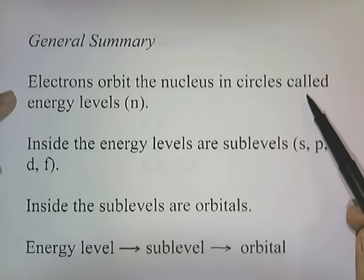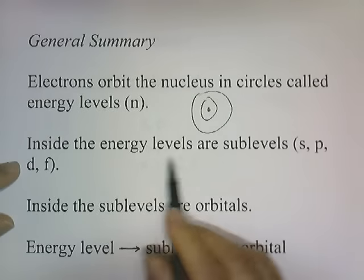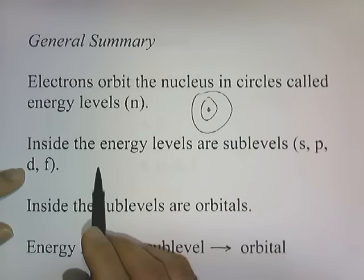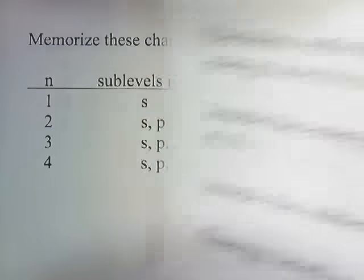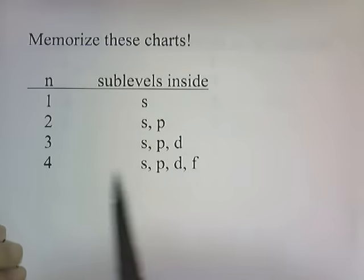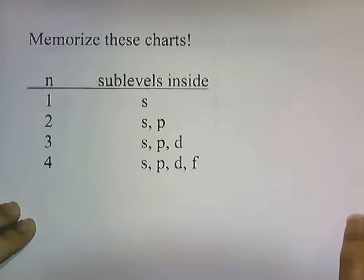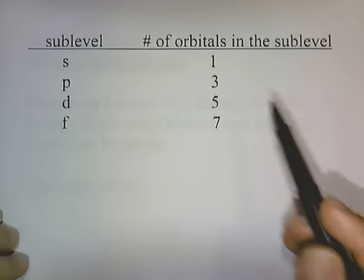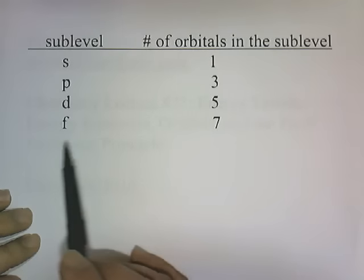To summarize: electrons orbit the nucleus in circles called energy levels. Inside the energy levels are sub-levels S, P, D, and F. Inside the sub-levels are orbitals. You need to memorize these charts — the number of sub-levels inside each energy level, and the number of orbitals in each sub-level: S has 1, P has 3, D has 5, and F has 7.